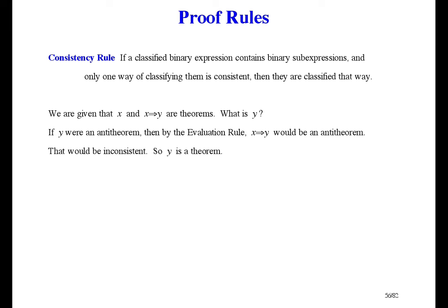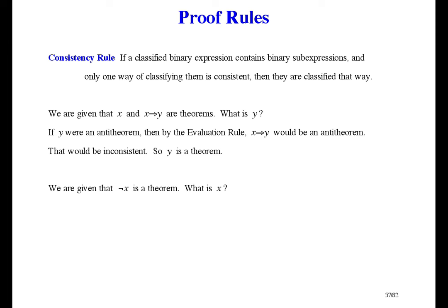Here's another example: we're given that not x is a theorem. What's x? If x is a theorem, then the truth tables say that not x is an anti-theorem. But we already know it's a theorem, so x has to be an anti-theorem. This example is important because it means that we never need to talk about anti-axioms or anti-theorems — if we want to say something is an anti-theorem, we just say its negation is a theorem.